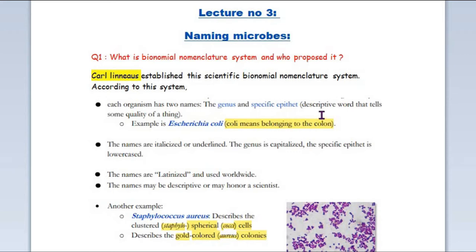This specific epithet is basically a descriptive word which is based on the organism's particular characteristic or something that explains it. For example, Escherichia coli — the 'coli' refers to colon, because colons are present in our intestine. This is the reason it is associated with Escherichia coli.